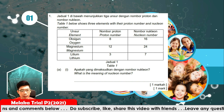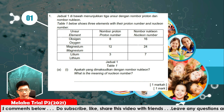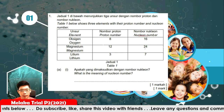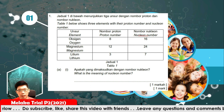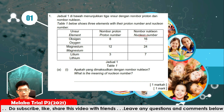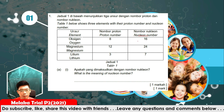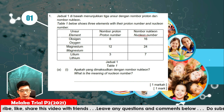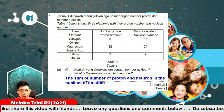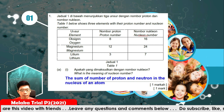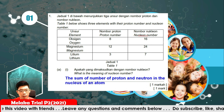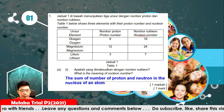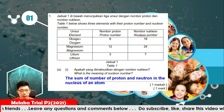What is the meaning of nucleon number? The nucleon number is the total or the sum of the number of protons and neutrons in the nucleus of an atom.